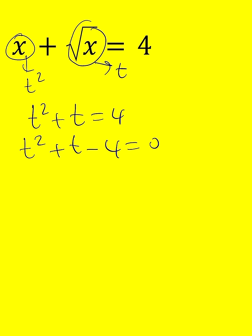And then we can just solve it. t equals negative b plus minus the square root of b squared, which is 1, minus 4ac, which becomes a plus sign. So that's going to be 16 under the radical, all divided by 2.